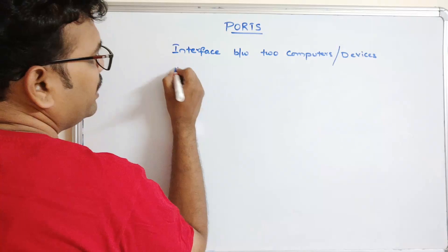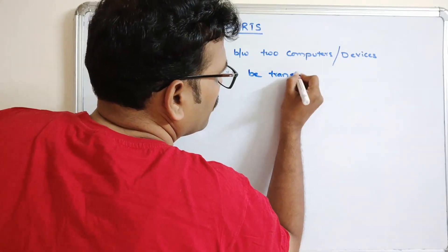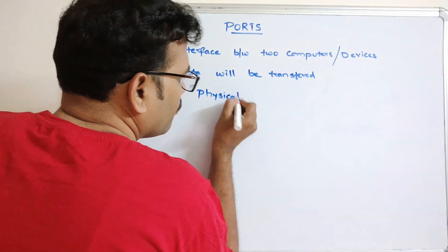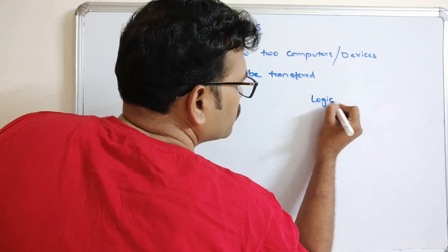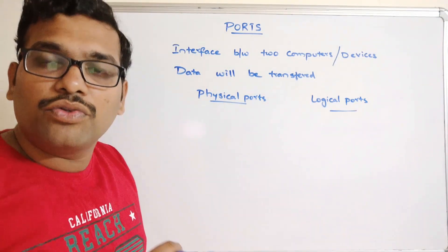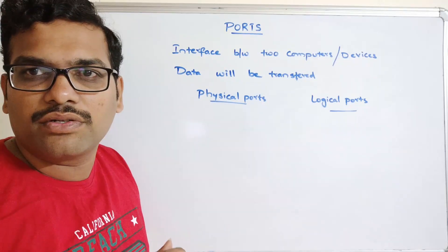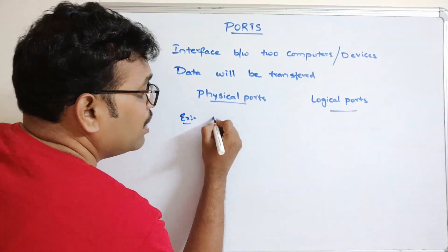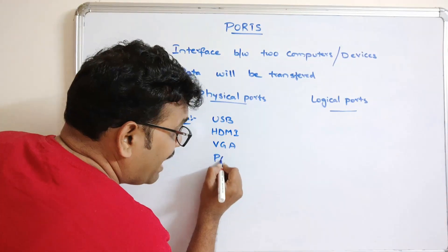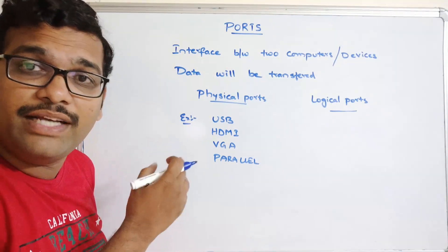Ports are divided into physical ports and logical ports. Physical ports actually exist on the hardware, and data is transferred through them. Examples of physical ports include USB ports, HDMI ports, VGA ports, and parallel ports — all of these are physical ports through which data is transferred between physical devices.